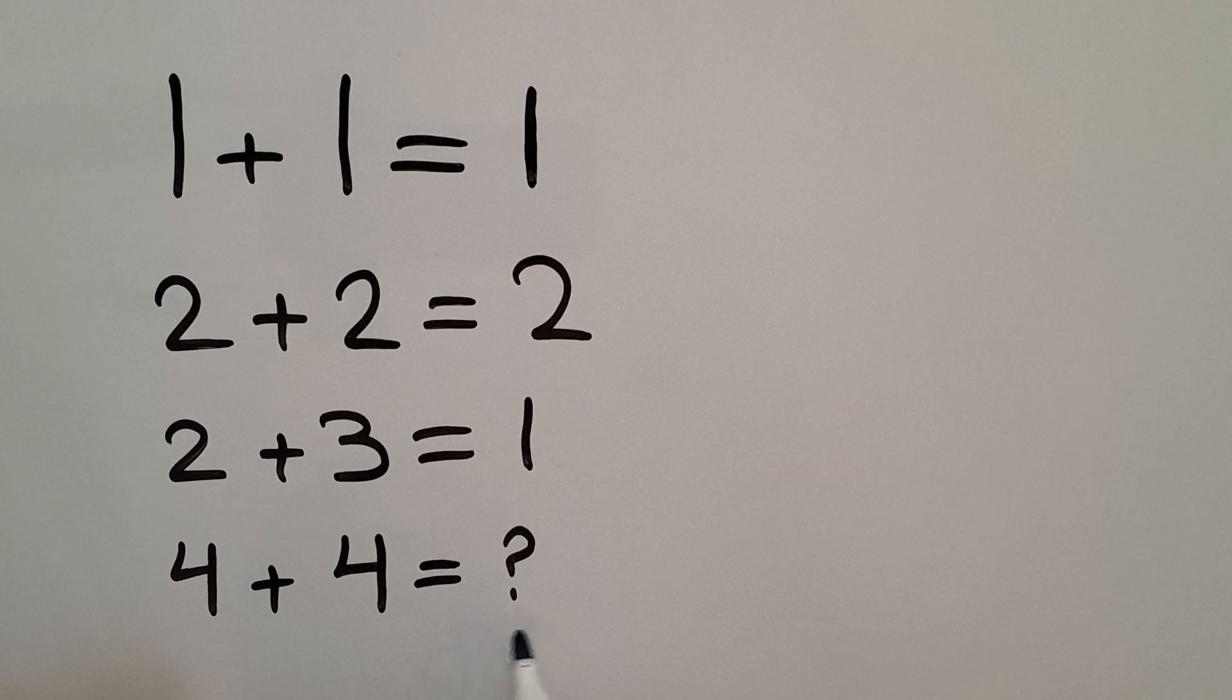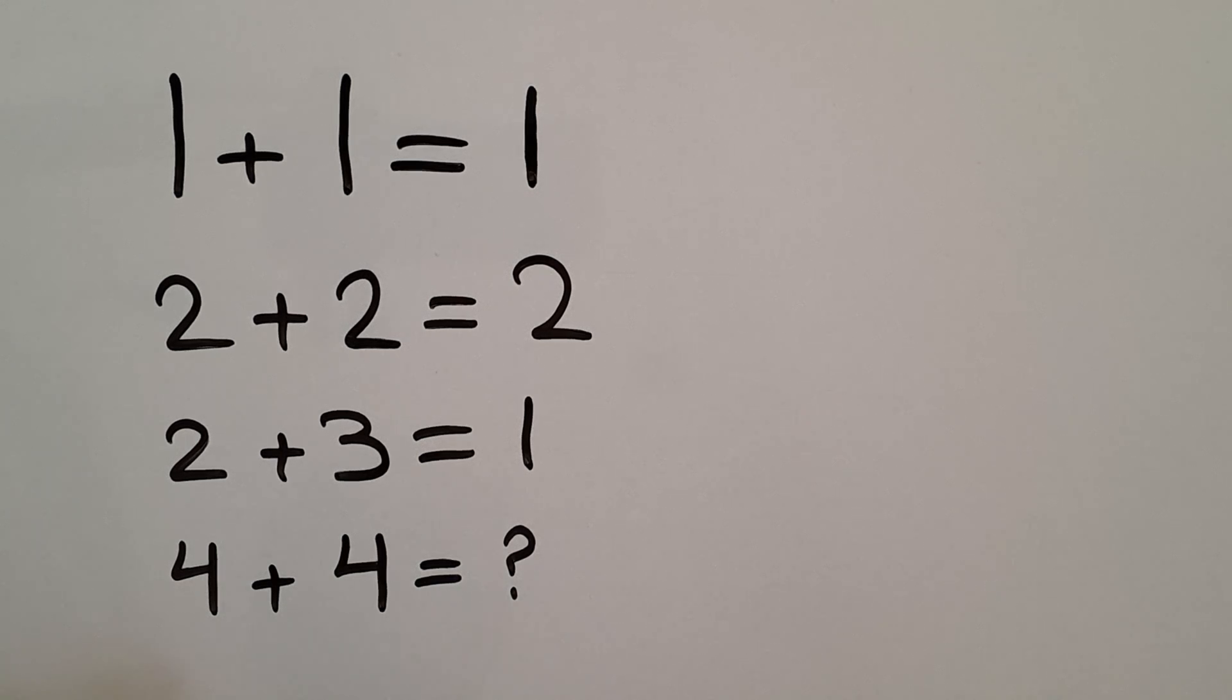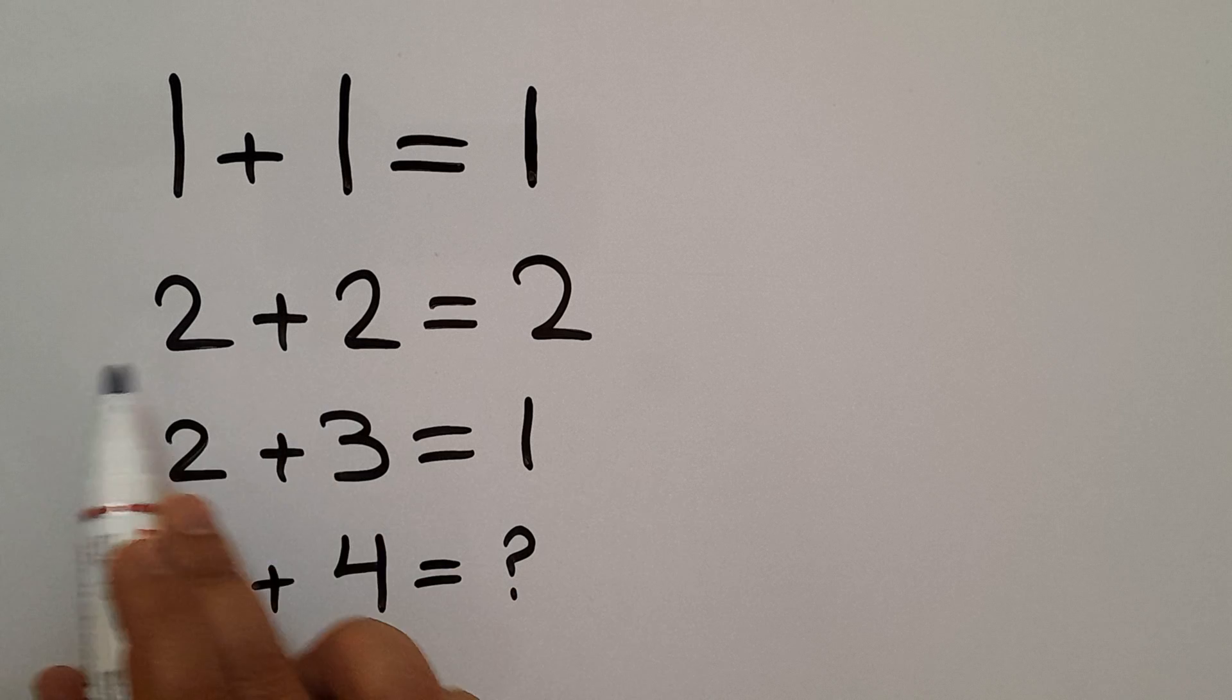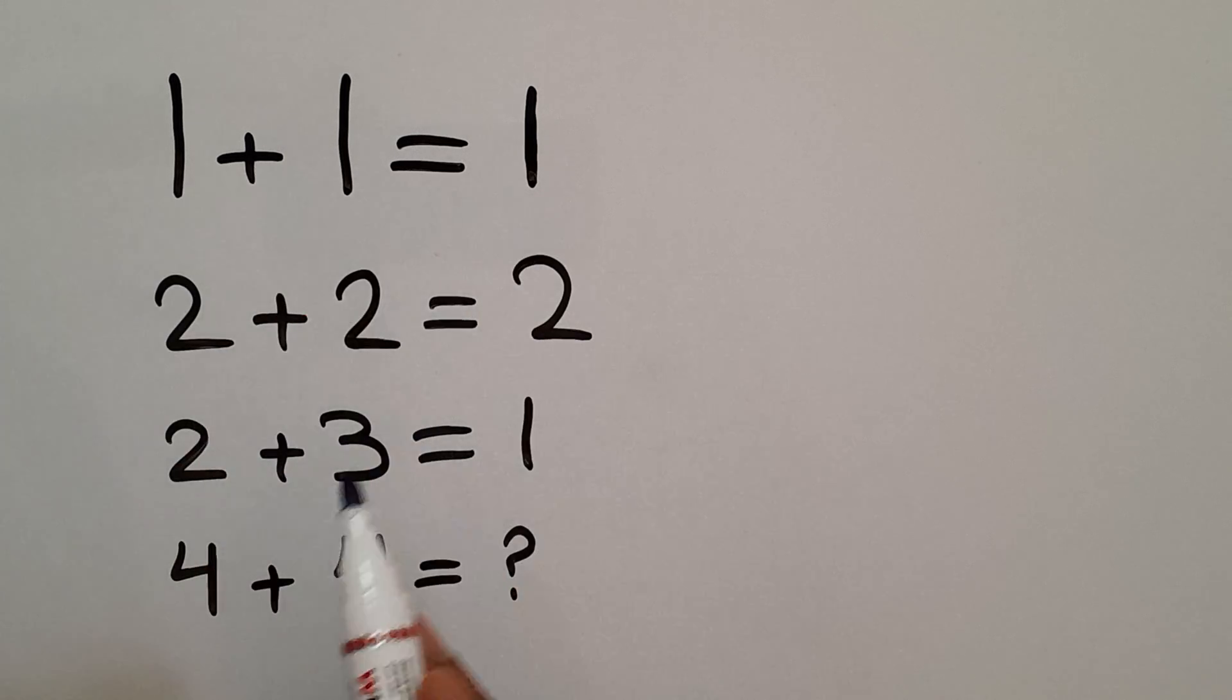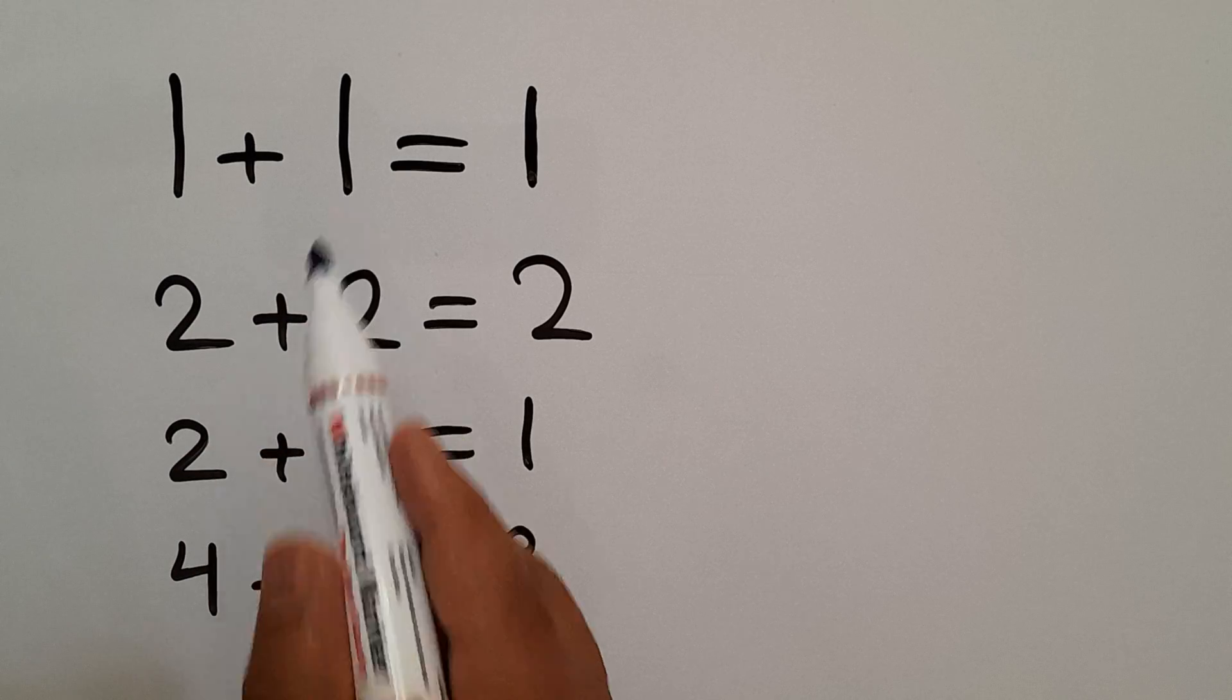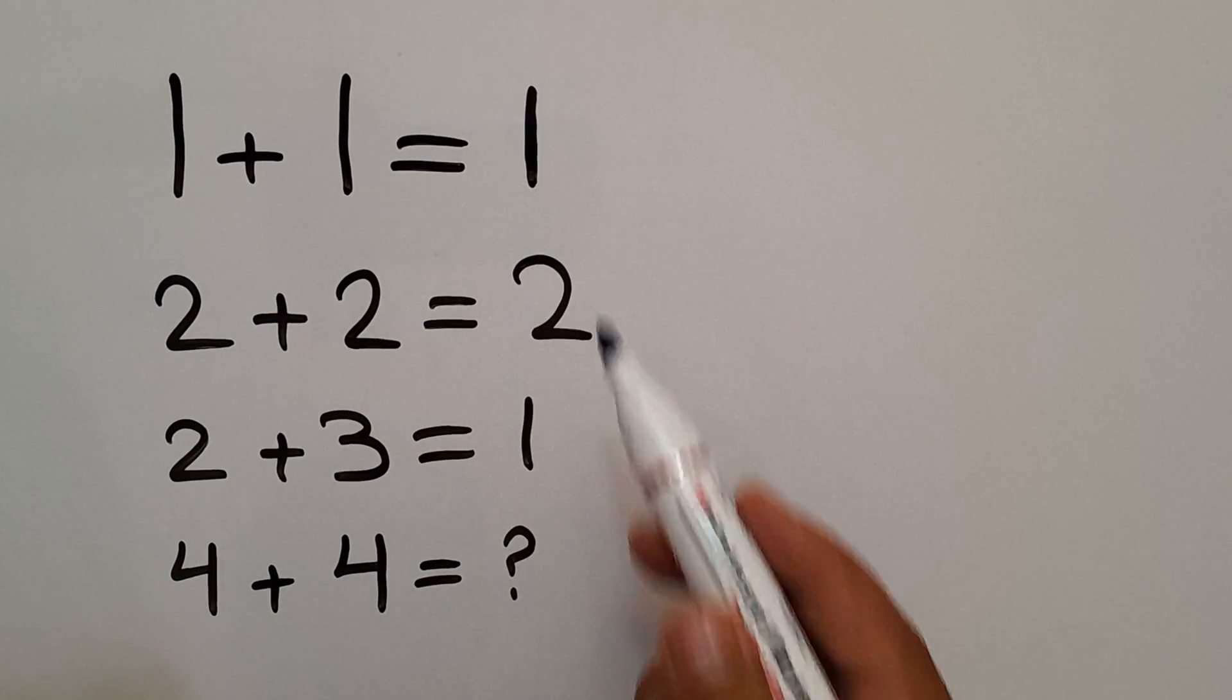Are you ready to solve? Let's go! In each line we have three numbers and we need to find the relationship between the left-hand side numbers and the right-hand side number.